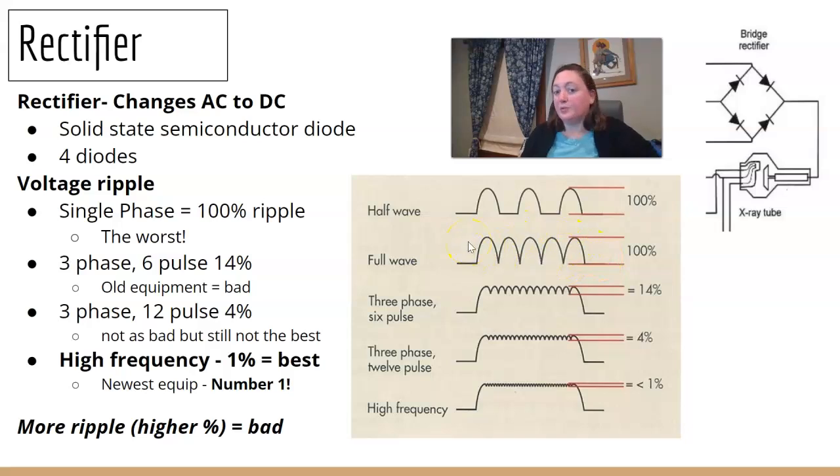As your equipment has improved over time, we started with single phase equipment. And then we went to three phase with a six pulse. So we had more pulses involved. Then we went three phase, 12 pulse. Again, more pulses, less drop. Your newest, and I think all the equipment you're working on, is high frequency equipment. There's something here that's called voltage ripple. And that's how much it has to drop back down before coming back up. So how much drop in between. So single phase has 100% ripple. Because it has to go all the way back down to zero and then back up again. And it's bad. So 100% is bad.